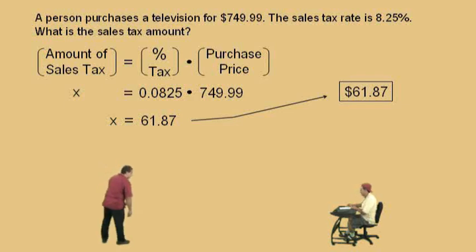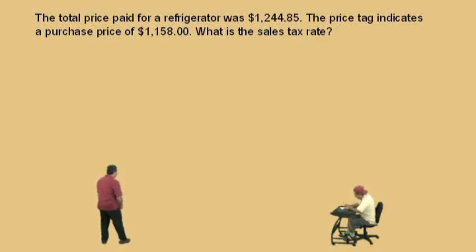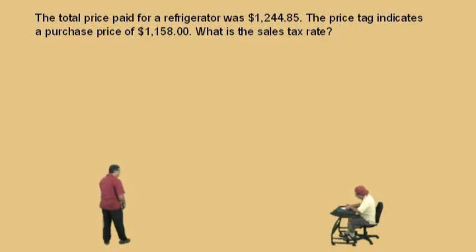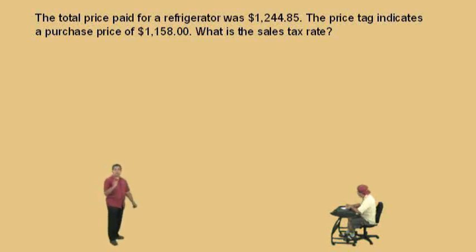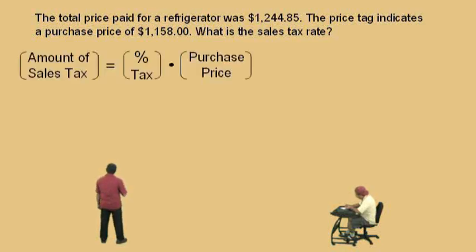That means the amount of sales tax for this television at the tax rate of 8.25% is $61.87. Very nice, Charlie. Let's do another one. Now, the total price paid for a refrigerator is $1,244.85. The price tag indicates a purchase price of $1,158. What is the sales tax rate? So here we're looking for the percentage.